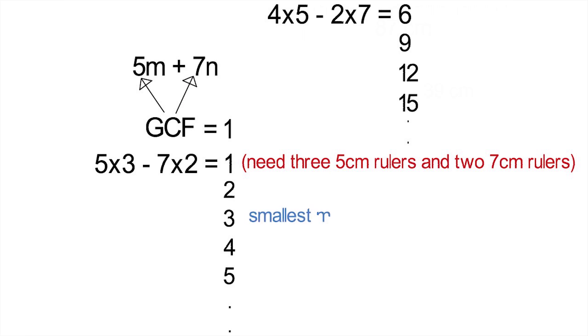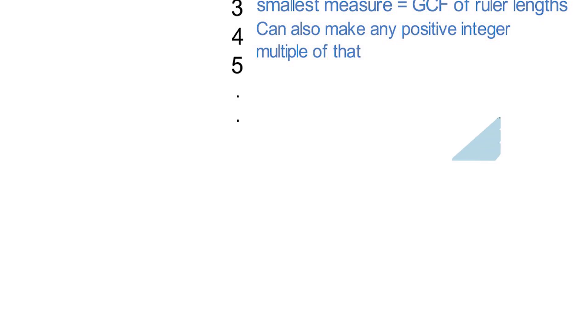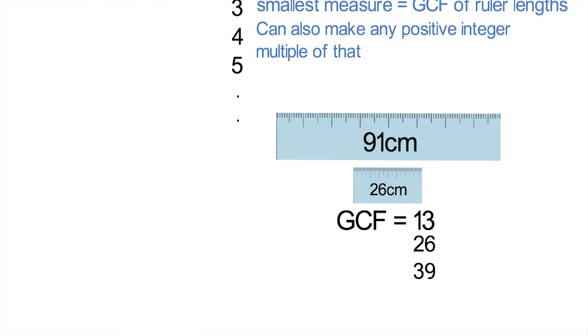The smallest measure you can make is the greatest common factor of the ruler lengths. Then you could also make a measure of any positive integer multiple of that. If our ruler lengths are 91 centimeters and 26 centimeters, the greatest common factor is 13. So we can measure 13 centimeters, or 26, 39, 52, and any integer multiple of 13, but nothing in between.